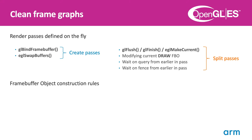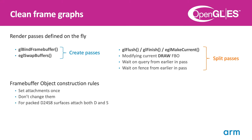For OpenGL ES, the Mali drivers use the framebuffer object as a container to track some optimization state. To keep these optimizations enabled as much as possible, we recommend treating the FBO state as immutable once created. Also, if you are using packed D24S8 textures, always attach both to the framebuffer object, as this works best with our AFBC framebuffer compression.